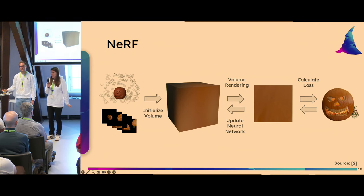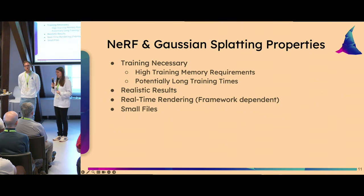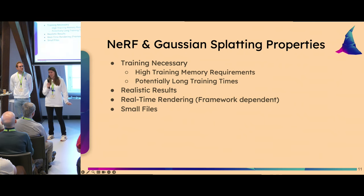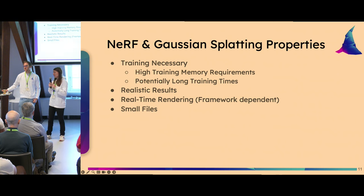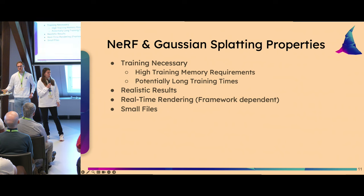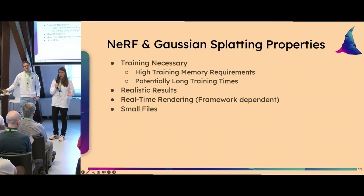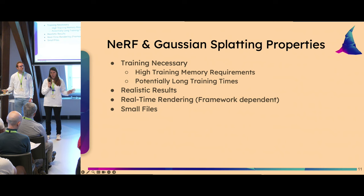NeRFs and Gaussian Splats share a lot of similarities: both need training, which is the annoying part. Early NeRFs trained for days, but now they train in a few minutes, making them much more usable. The downside is that training is very memory-intensive — we won't be showing a live training demo because of GPU memory requirements. After training, both methods reward us with very realistic results that can be rendered in real time depending on the framework, and especially for NeRFs the files are quite small because all that's stored are the neural network weights — not millions of triangles or textures.